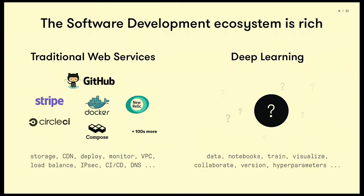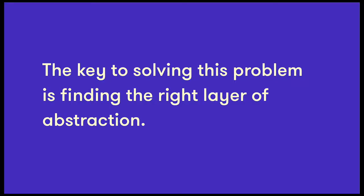What is obviously missing from this picture is the equivalent for AI developers. We've found that the key to solving this problem is finding the right layer of abstraction. On one extreme, you have toy projects where you can tinker with a neural network in a browser — these tools are often severely limiting. On the total opposite end of the spectrum, you have very powerful yet complex low-level libraries like Kubernetes, which really live in the world of DevOps and not in the wheelhouse of a developer. Finding that right layer of abstraction is really important so that developers can be productive.